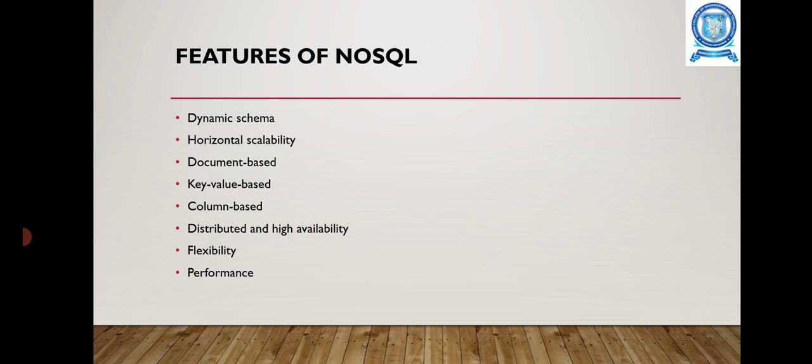The third feature is document-based. Some NoSQL databases such as MongoDB use a document-based model where data is stored in a semi-structured format such as JSON or BSON. The next feature is key-value based. Other NoSQL databases such as Redis use a key-value data model where the data is stored as a collection of key-value pairs.